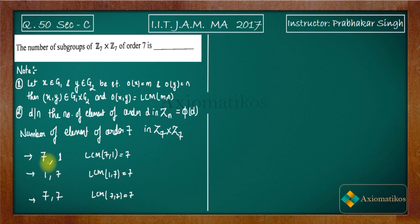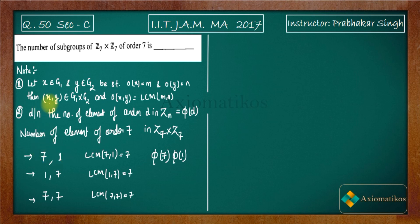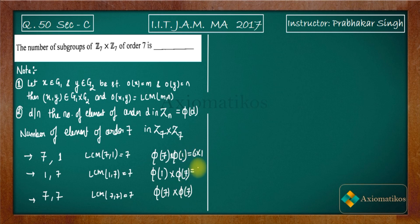So the three cases are (order 7, order 1), (order 1, order 7), and (order 7, order 7). By Note 2, the number of elements of order 7 in Z7 is φ(7) = 6, and the number of elements of order 1 is φ(1) = 1. So the counts are 6×1 = 6, 1×6 = 6, and 6×6 = 36, giving a total of 48 elements of order 7 in Z7 cross Z7.